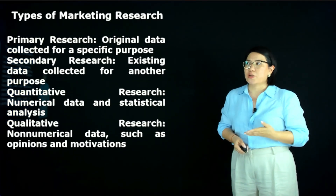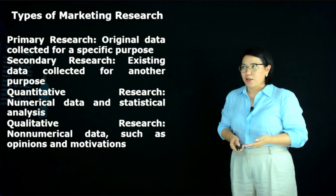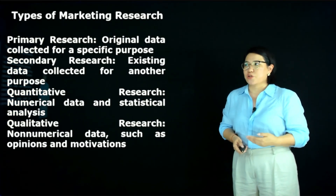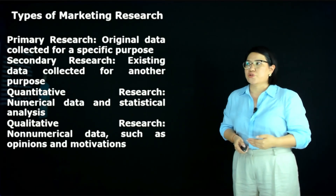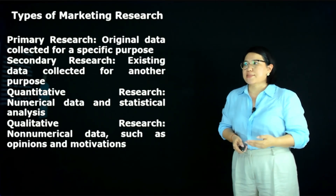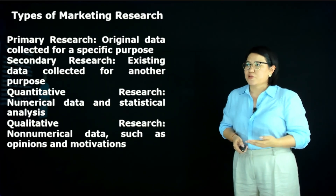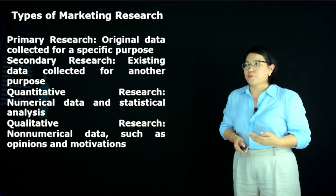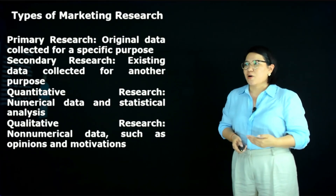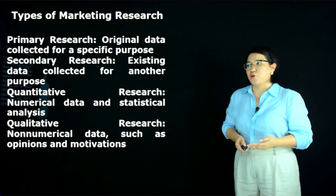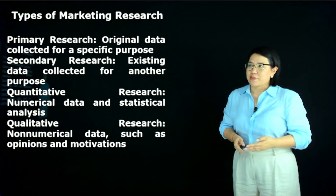Here we consider the types of marketing research. Primary research is original data collected for a specific purpose. Secondary research is existing data collected for another purpose. Quantitative research involves numerical data and statistical analysis. Qualitative research involves non-numerical data such as opinions and motivations.